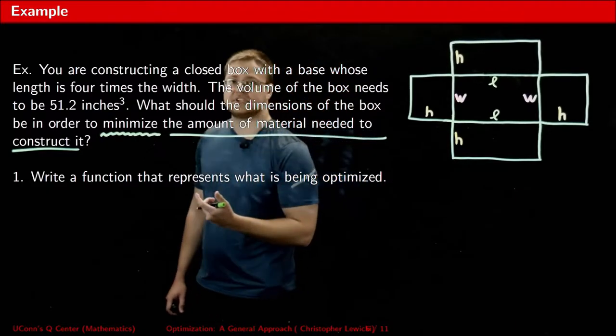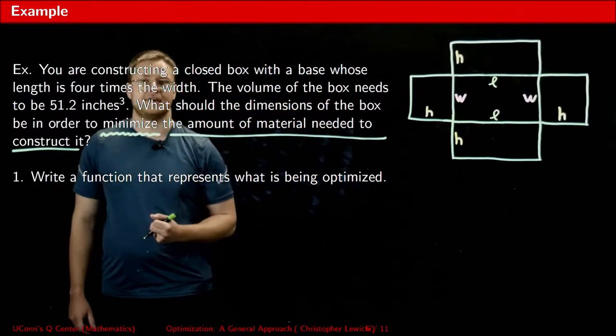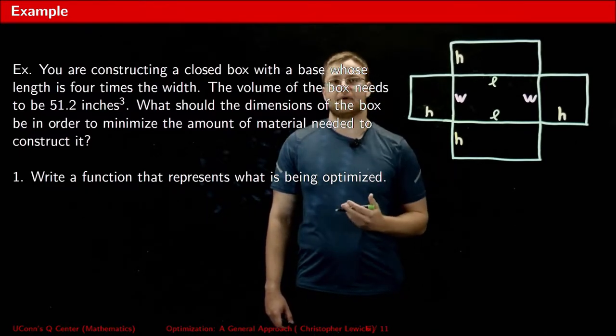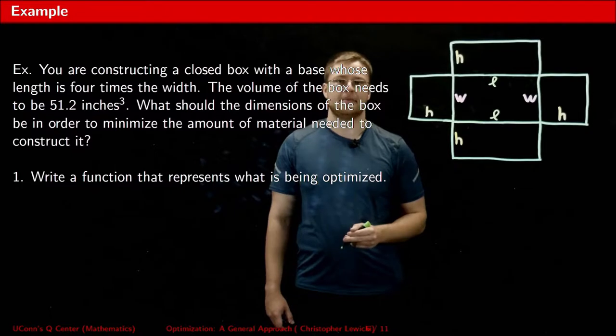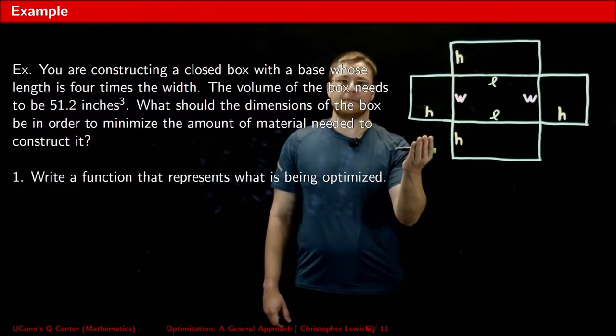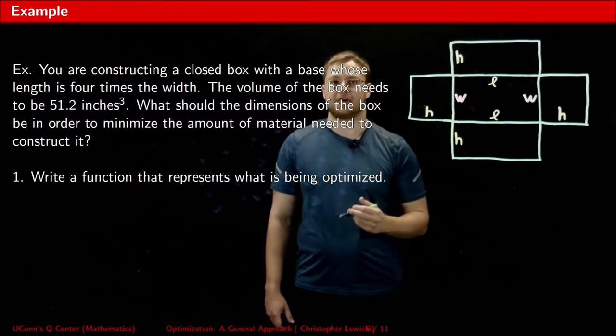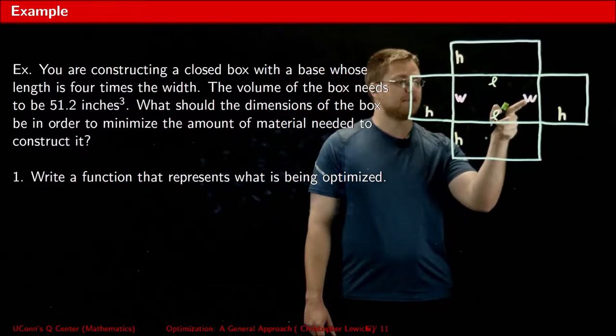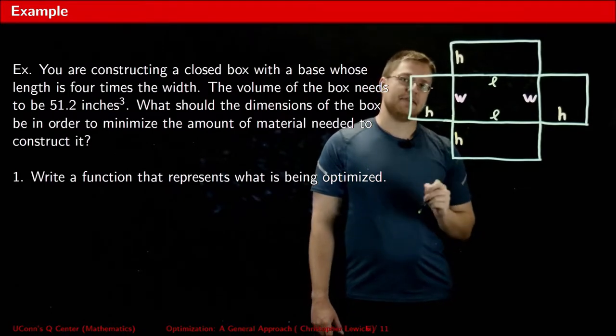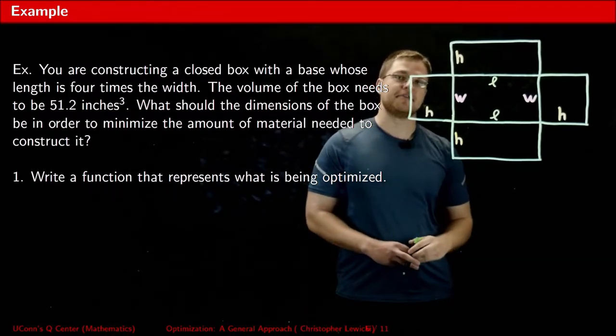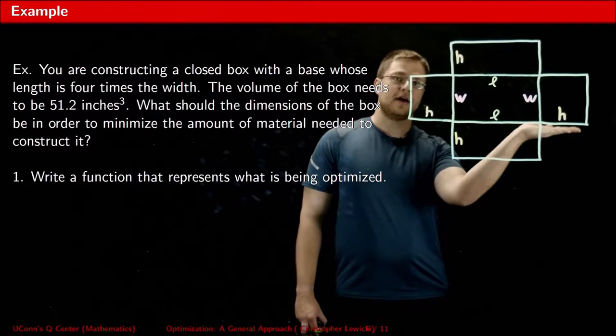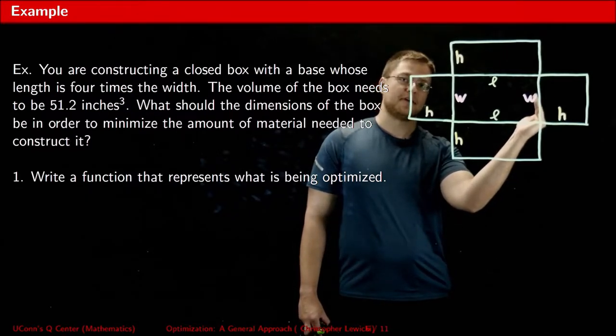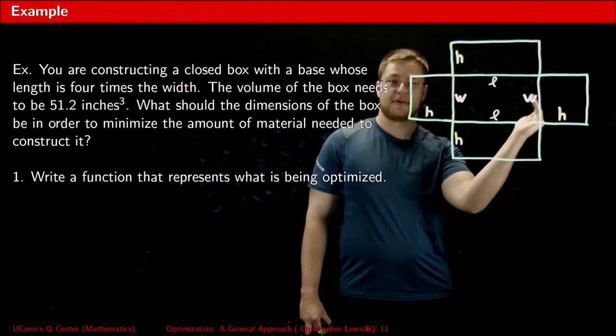So we need to build a function that represents our surface area. For problems like these, I find it very useful to draw a picture to help me make sense of where the function to be optimized comes from. Imagine this as a picture of a flat piece of cardboard that we're later going to fold up into a box. As with any box, we have a length, as well as a width, as well as a height. The sides labeled with the H represent the height because if you think about it, we're starting off with a flat piece of cardboard, but when we fold up the sides, these are the sides that are going to become vertical and therefore the ones that represent the height.